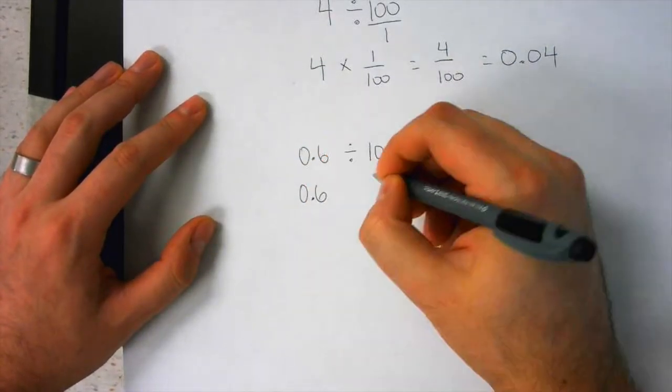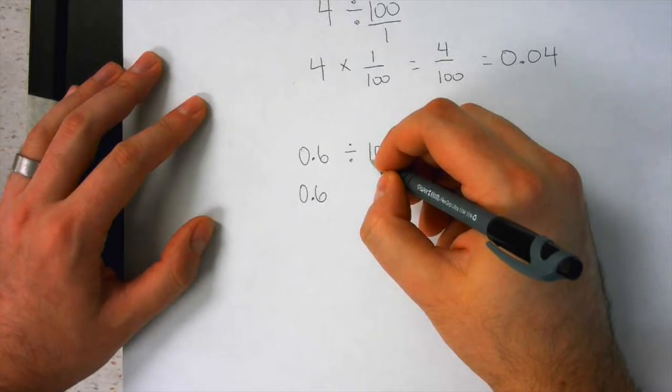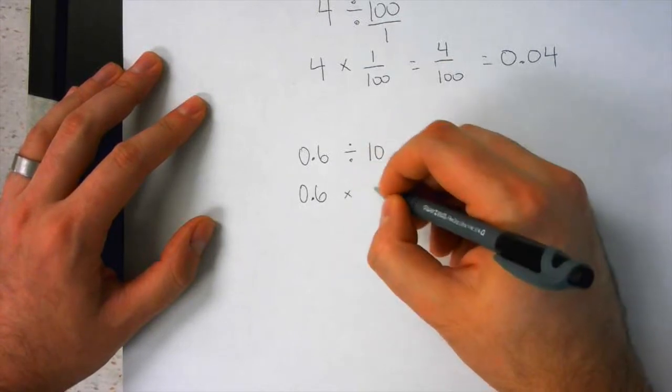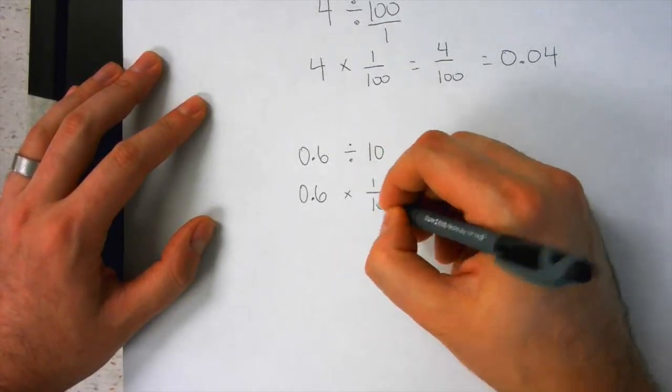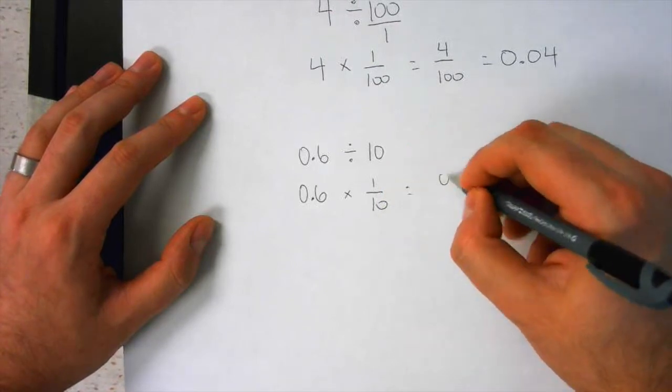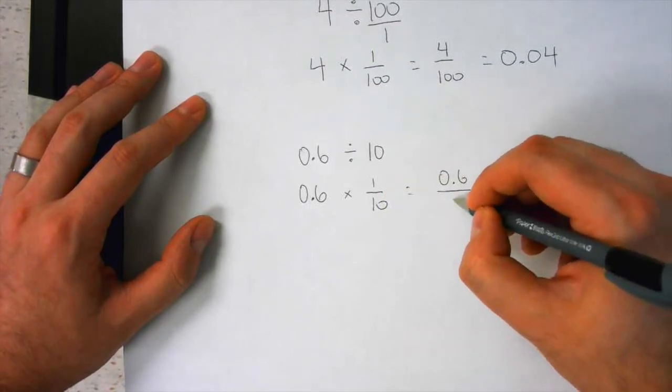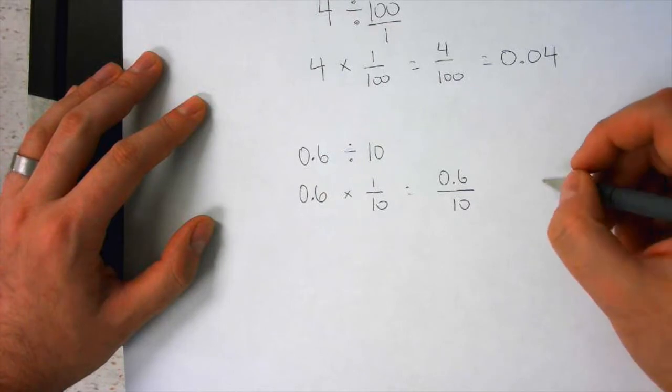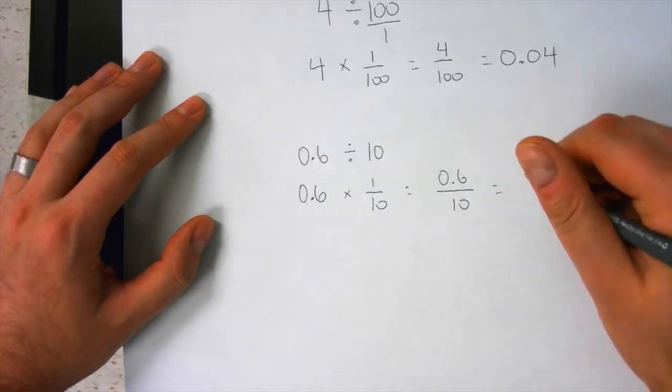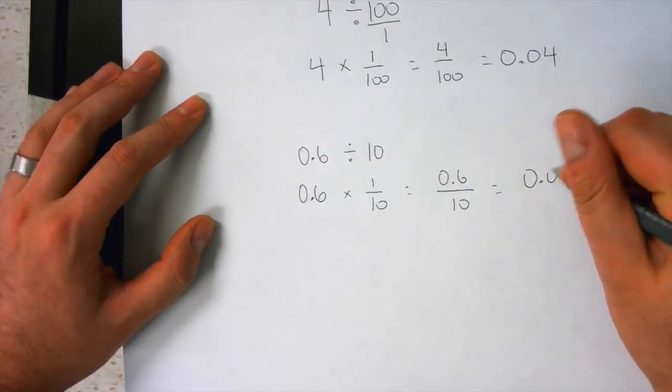Okay, so 0.6. So 10 is 10 over 1. So you would multiply it by 1 over 10, right? So which would equal 0.6 over 10. This equals 0.06.